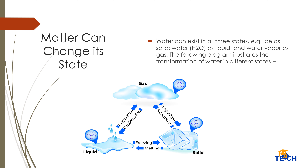Now let's talk about matter's change in states. Water can exist in all three states: for example, ice as a solid; water (H2O) as a liquid; and water vapor as a gas. The following diagram illustrates the transformation of water in different states.